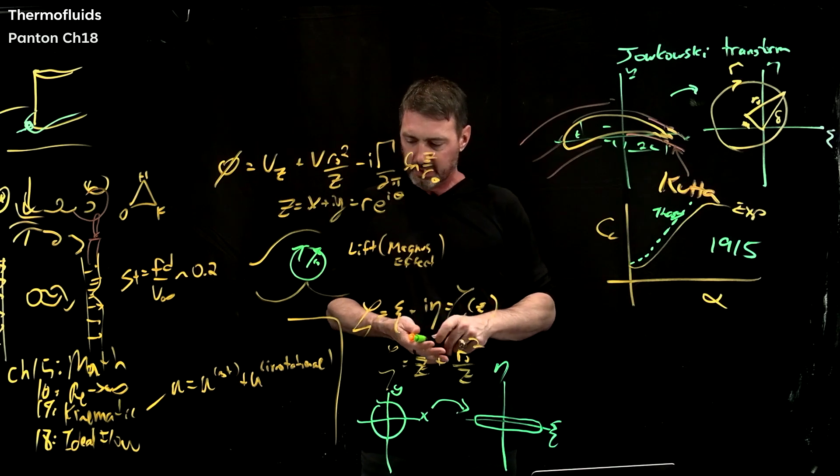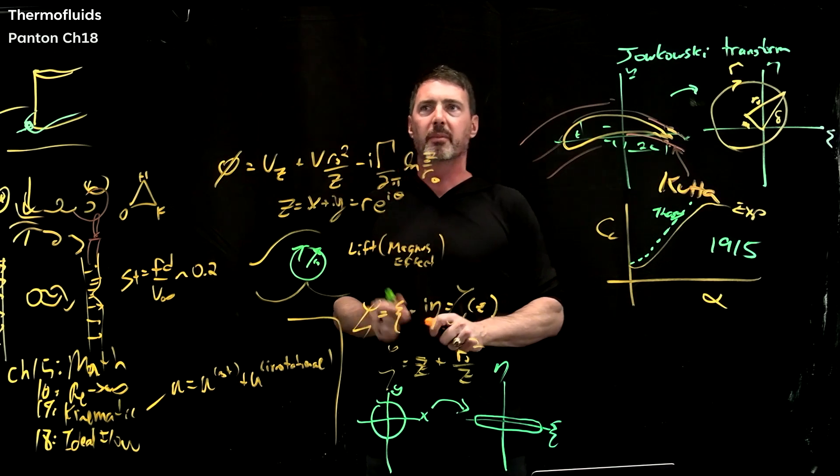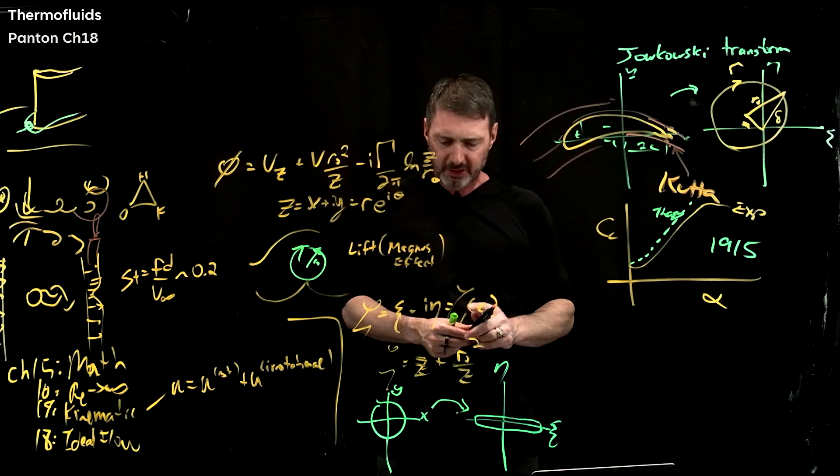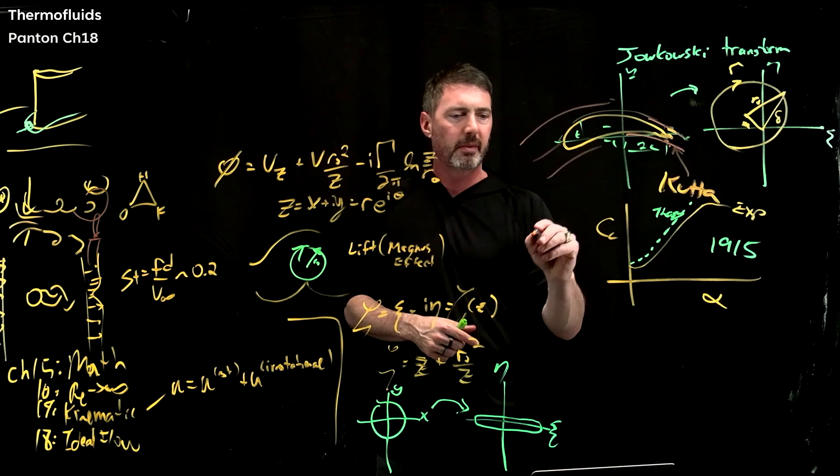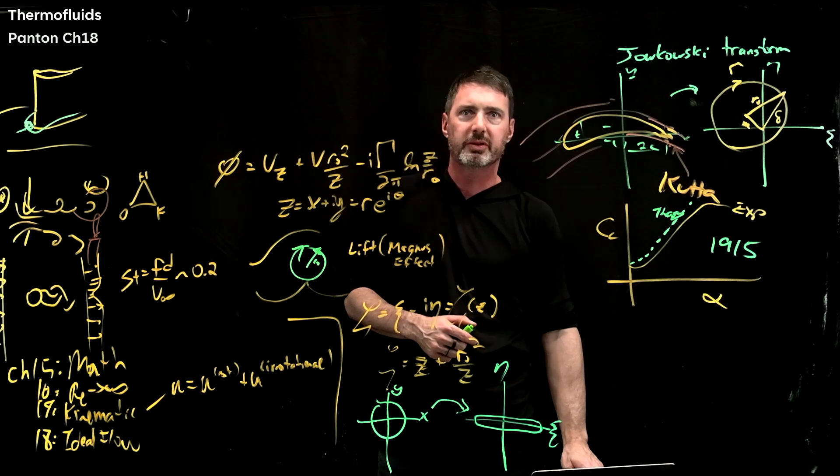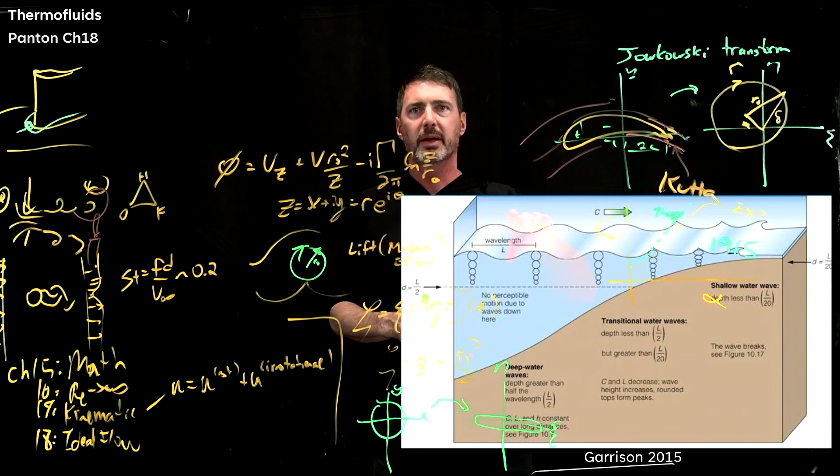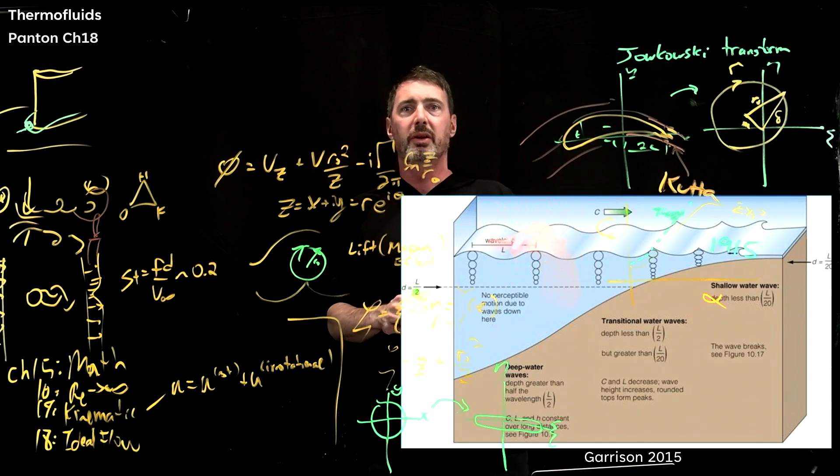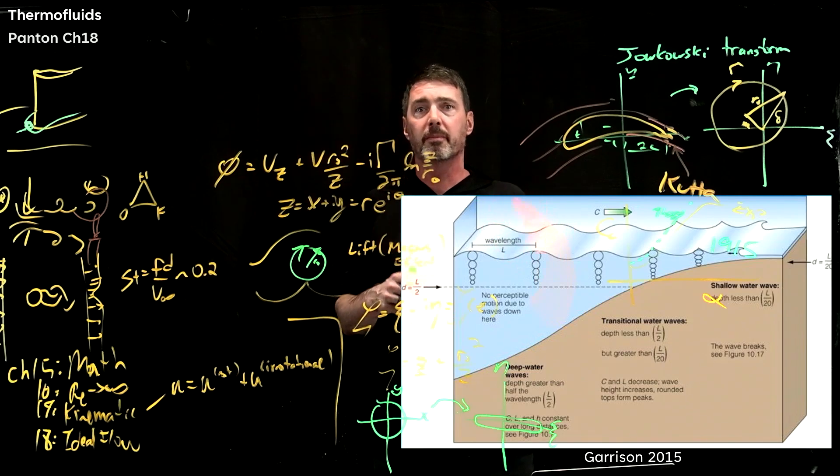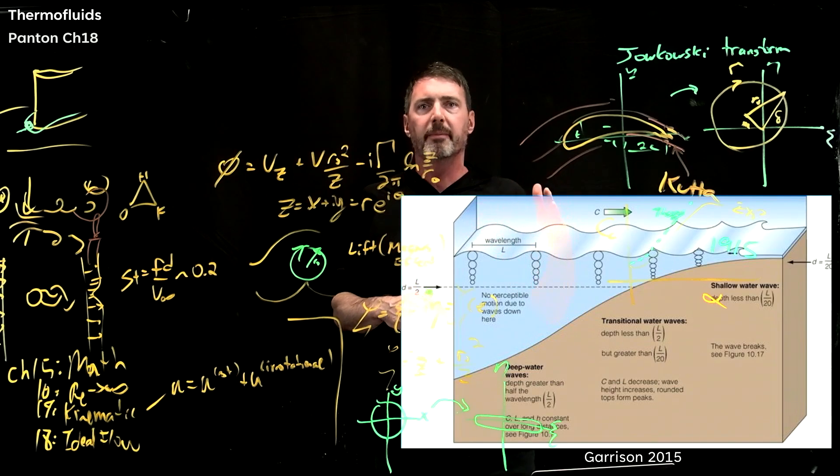And the last one we'll talk about, just briefly, but it is considered a part of 18 and ideal flows. It's actually gravity waves. And actually I think I'm just gonna pull up the picture. It's not too hard. And so what's interesting about gravity waves, literally like ocean waves, gravity waves, you have some sort of instability wherever they come from, usually the wind and things like that.